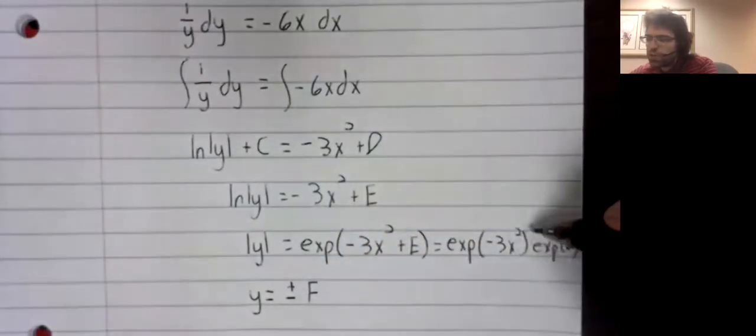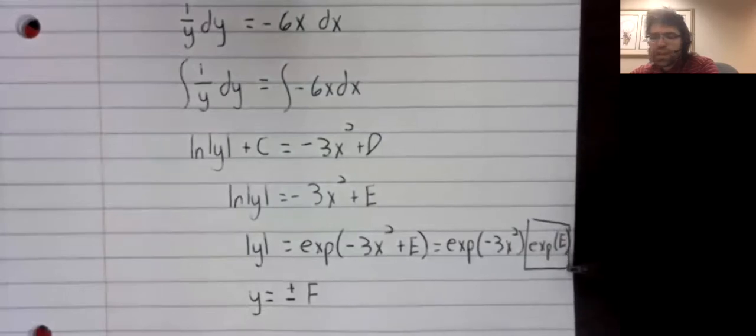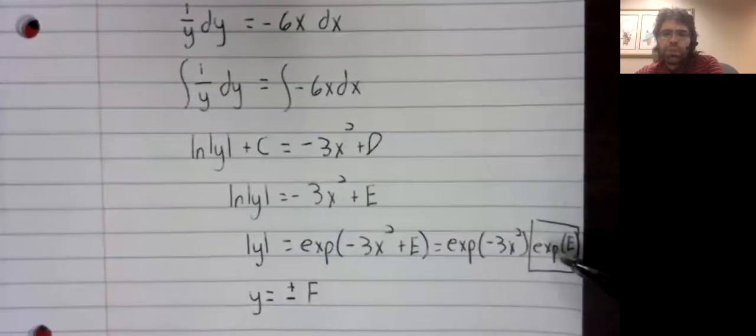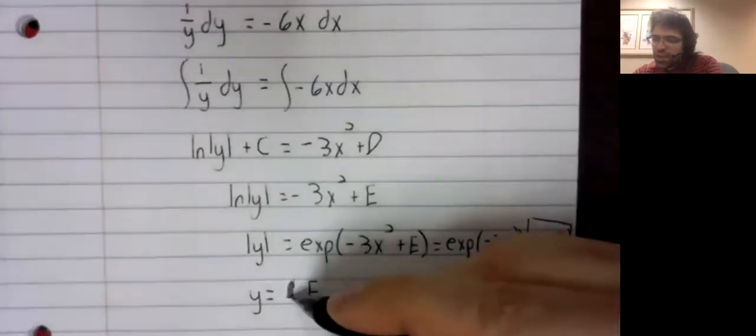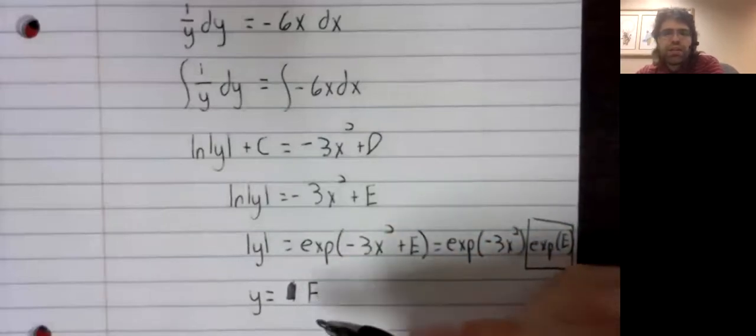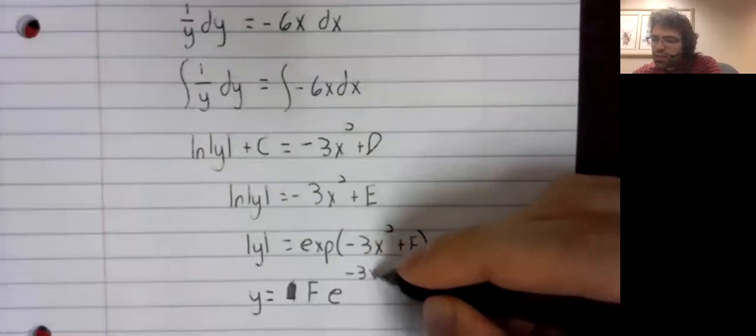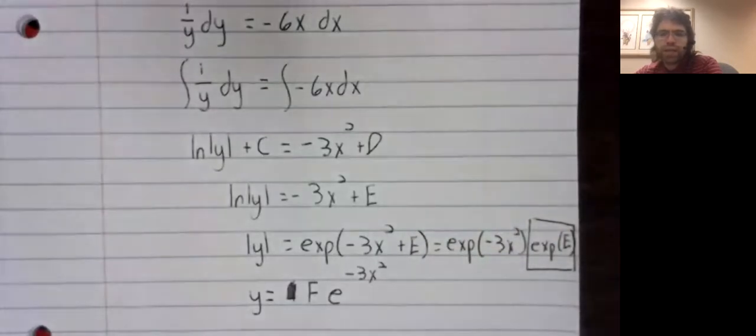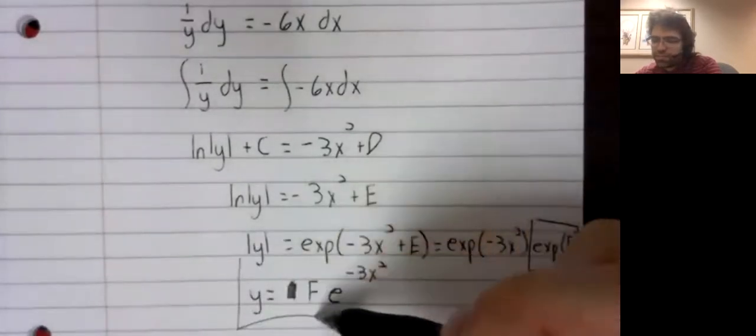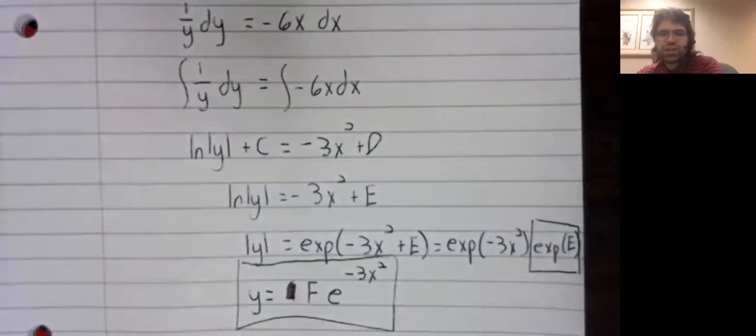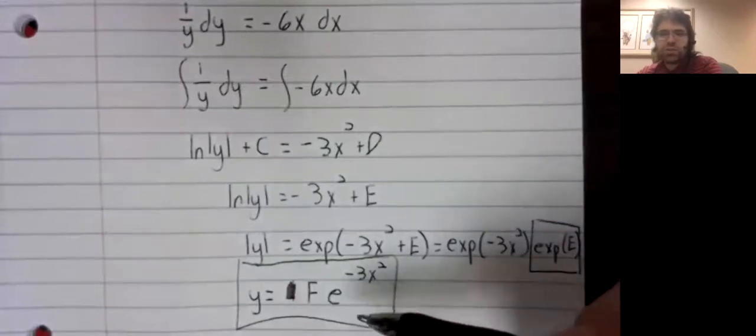And the way we're going to do that is we're going to take the exponential of E, which is an arbitrary positive constant. And we'll replace it with F, a truly arbitrary constant that can be positive or negative. And here we claim is why.